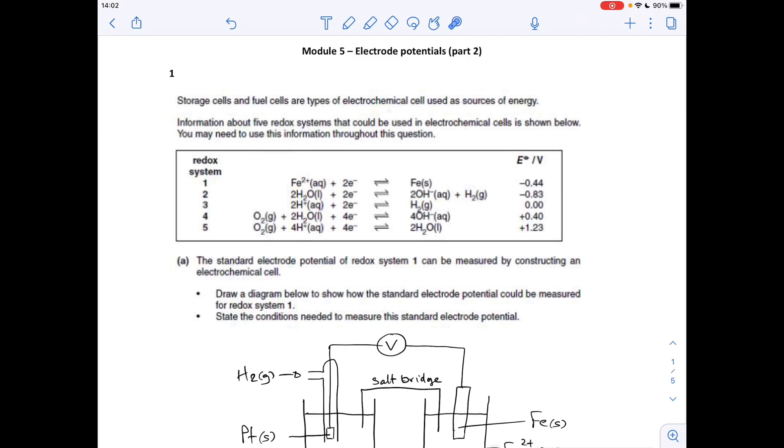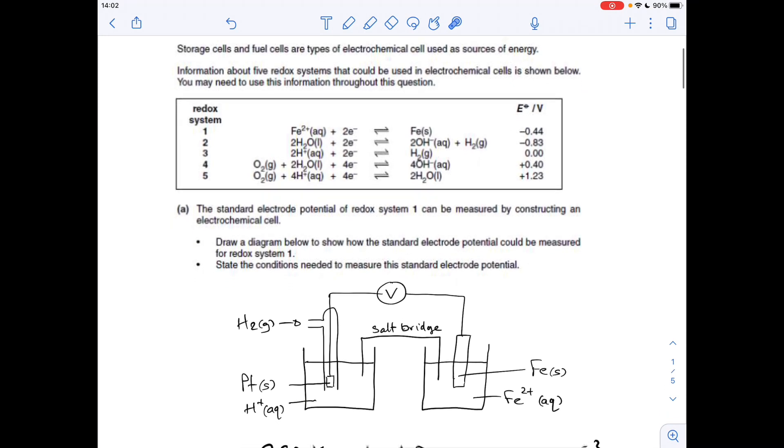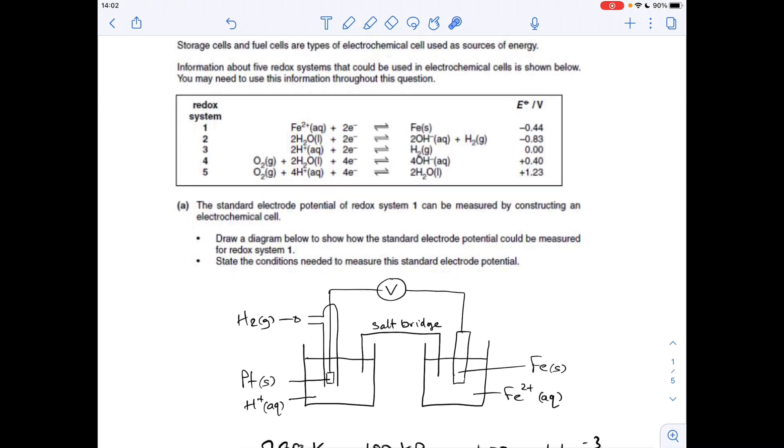Question one, we've got to draw the diagram for the cell that enables us to measure this standard electrode potential. It's obviously put against the standard hydrogen electrode. So in terms of the diagram, we need the hydrogen electrode on one side.